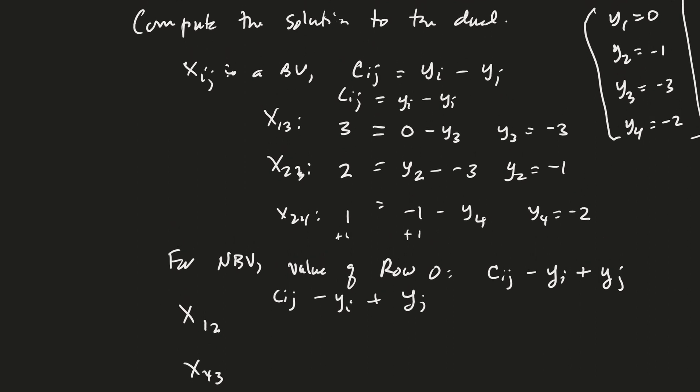Okay, so the cost for 1, 2 was 4, and the cost for 4, 3 is 5. And so this is going to be Y1, which is 0, plus Y2, which is minus 1. Okay, so what do we get from that? 4 minus 1, that looks like it's 3. Good. Then for this one, it's Y4, which is negative 2, plus Yj, which is Y3, which is negative 3.